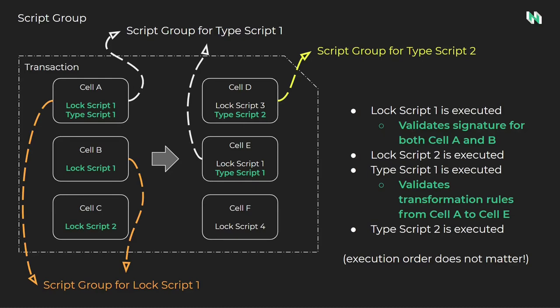This can be accomplished using syscalls in two different ways. The first is to use a syscall to read all input cells, loading cell A, cell B, and cell C in sequential order — checking on each iteration whether the cell uses LockScript1 before validating the signature. There is a better way: a specific syscall to load all input cells within the script group would only load cell A and cell B. This simplifies the processing so that each iteration can skip directly to validating the signatures, since the script group only contains cells matching the current lock script.